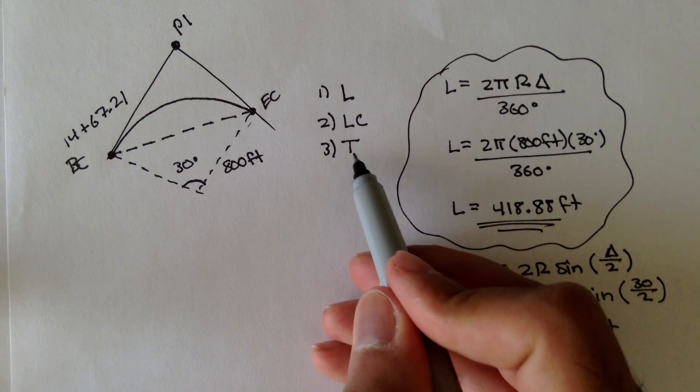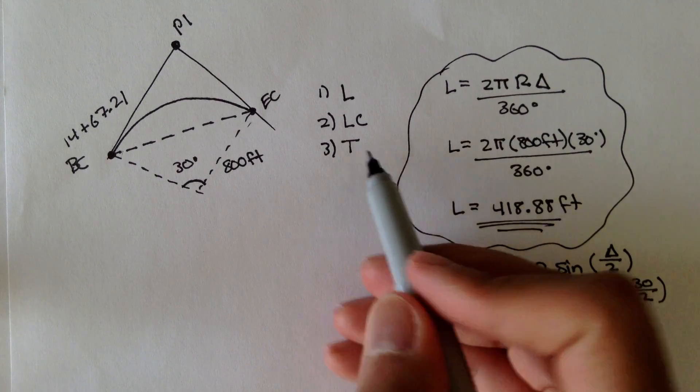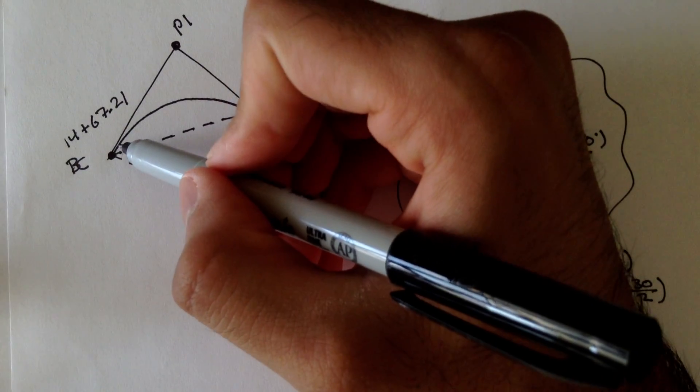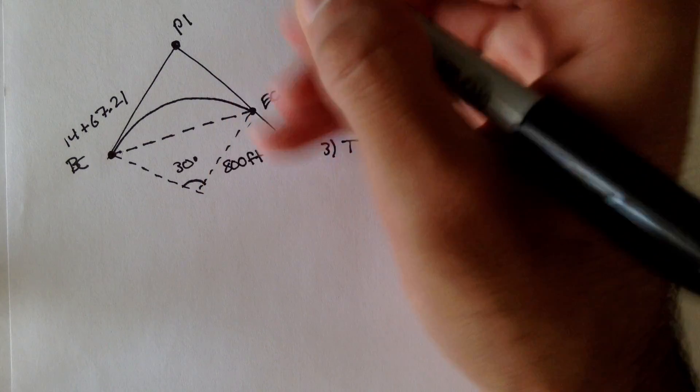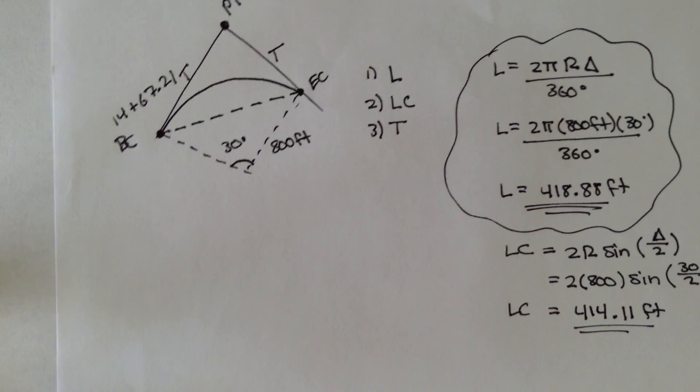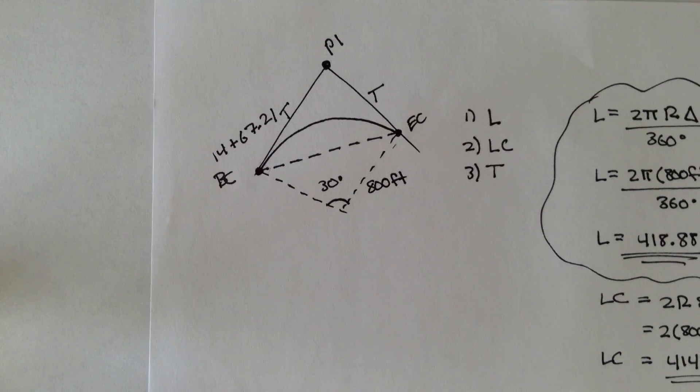Now, the last value we need to figure out is the tangent. Remember, tangent is the distance from BC to PI. So this is the tangent. This is T. And again, we have a formula for that.